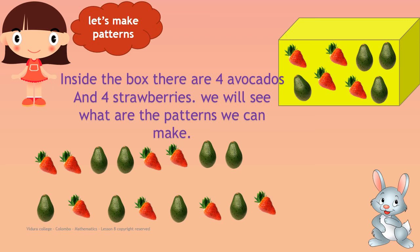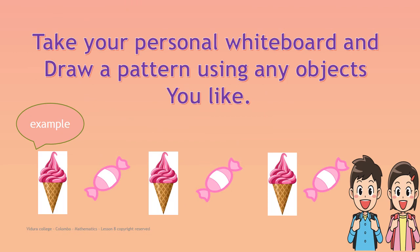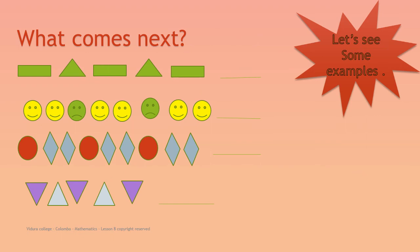Like this, you can make different patterns. Now take your personal whiteboard and make any pattern that you like using any objects. Here I used toffees and ice cream cones. Now we will do an activity — draw this in your personal whiteboard and answer what comes next. Have you all done? Let's check the answers.